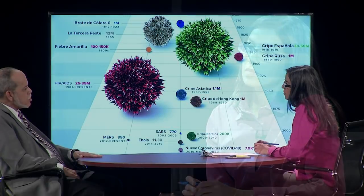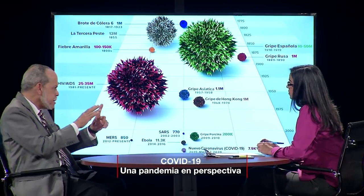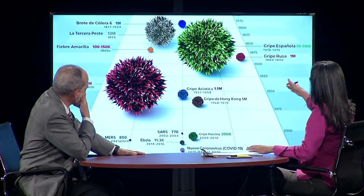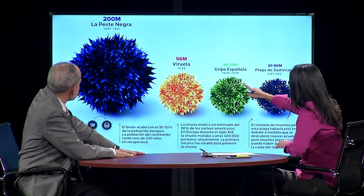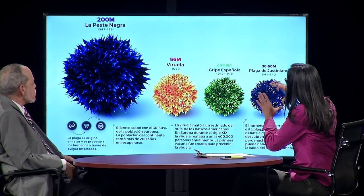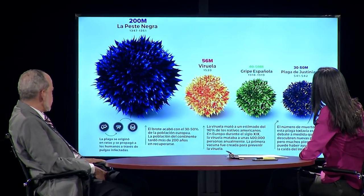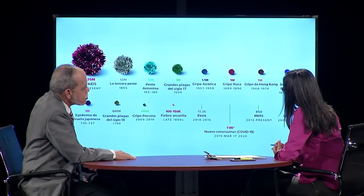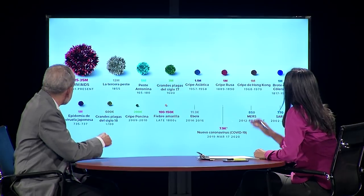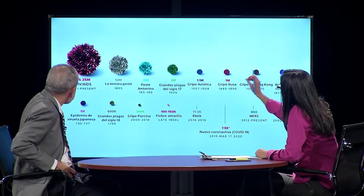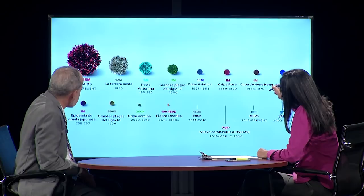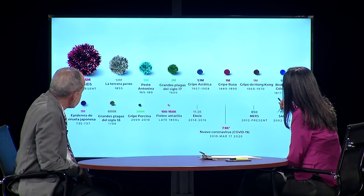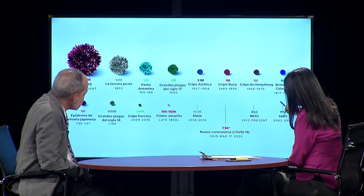Hay un dato interesante: cada paciente que se infecta, qué cantidad de pacientes potencialmente puede infectar en promedio. Tenemos una gráfica que nos ayuda. Ahí podemos ver en términos de tamaño o dimensión la peste negra comparada con la viruela, la gripe española y la plaga de Justiniano. Dicho sea de paso, la viruela ha sido erradicada del mundo; se desarrolló una vacuna altamente efectiva y en el año 1977 se diagnosticó el último caso. El nuevo coronavirus no está en el último lugar por ser el más nuevo, sino que está antes del MERS y el SARS, porque tanto el MERS como el SARS solamente tuvieron 850 y 770 muertos respectivamente.